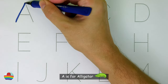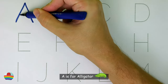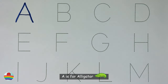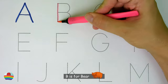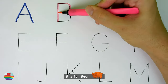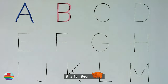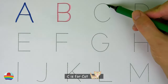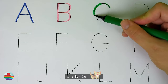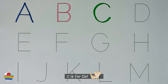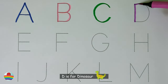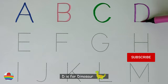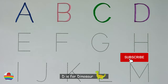A. A is for Alligator. A. B. B is for Bear. B. C. C is for Cat. C. D. D is for Dinosaur. D.